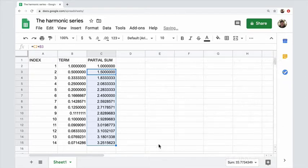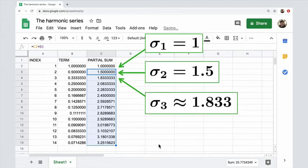Now, once again, just take a look at these first three. The first three partial sums are what we expected: 1, 1.5, and about 1.833. So it's looking good.